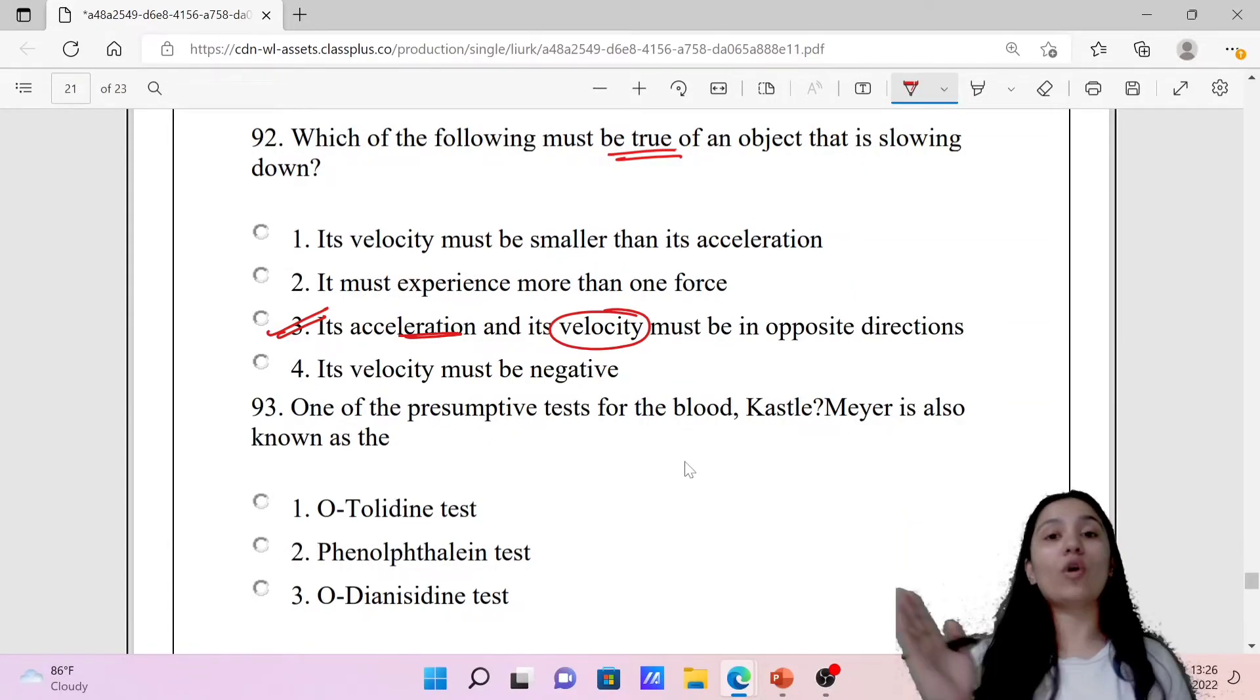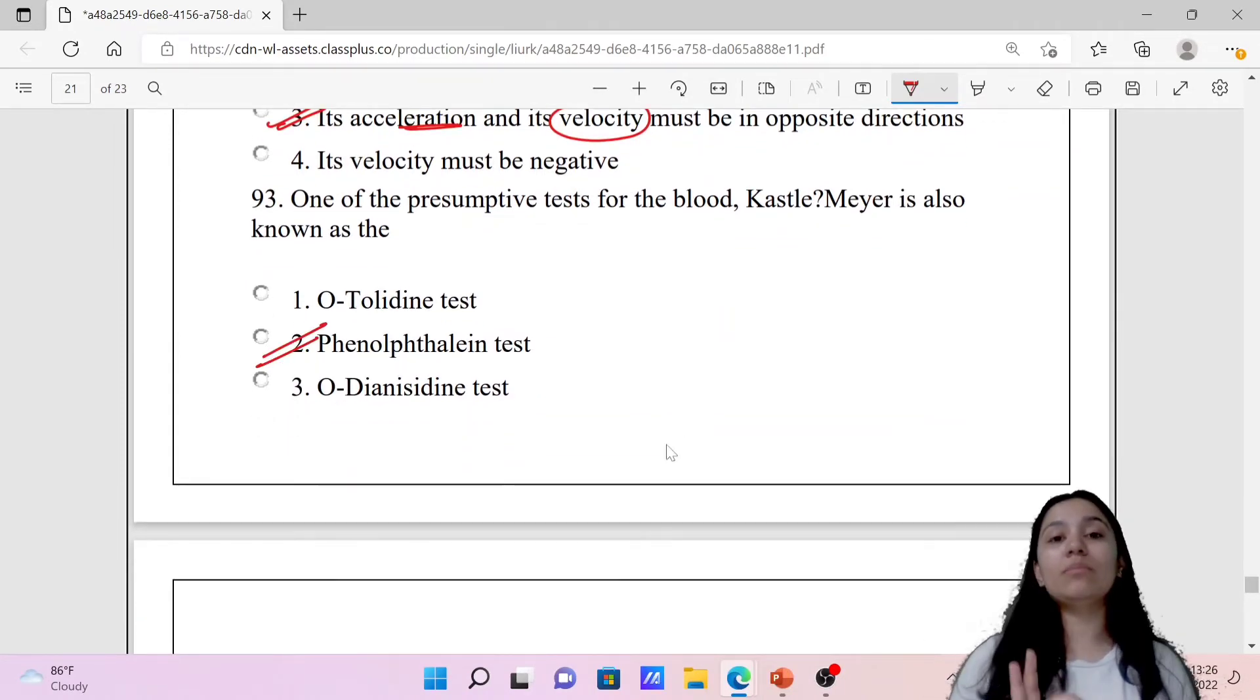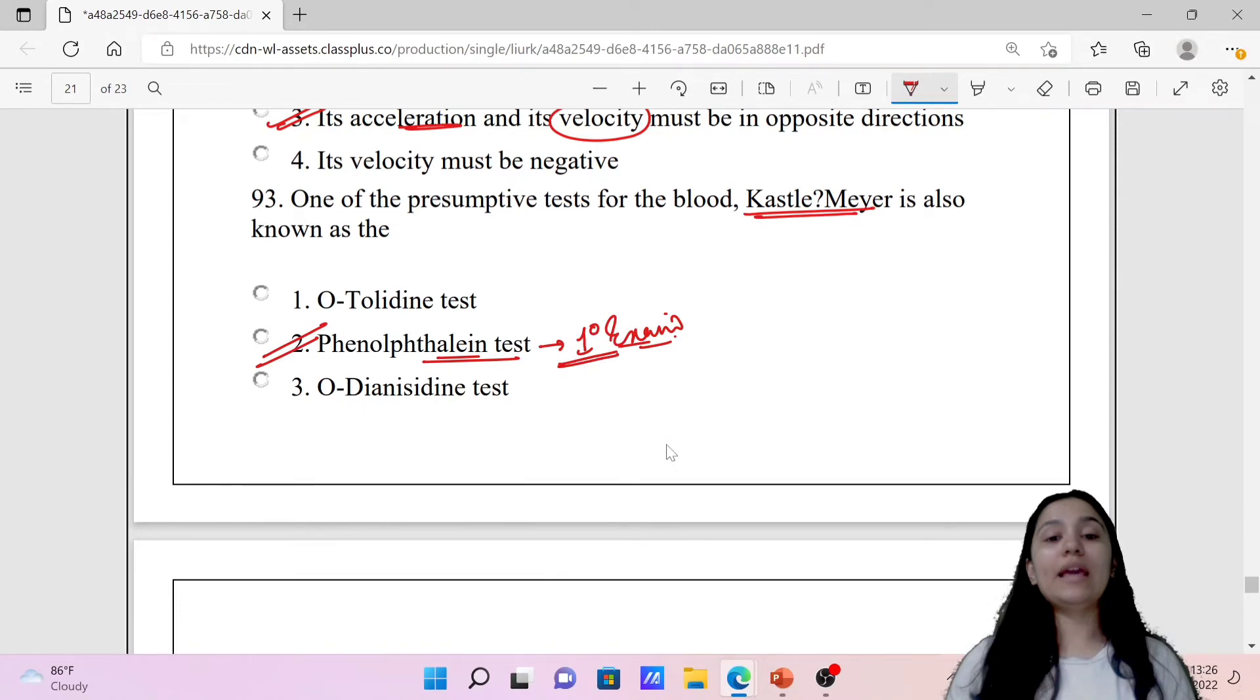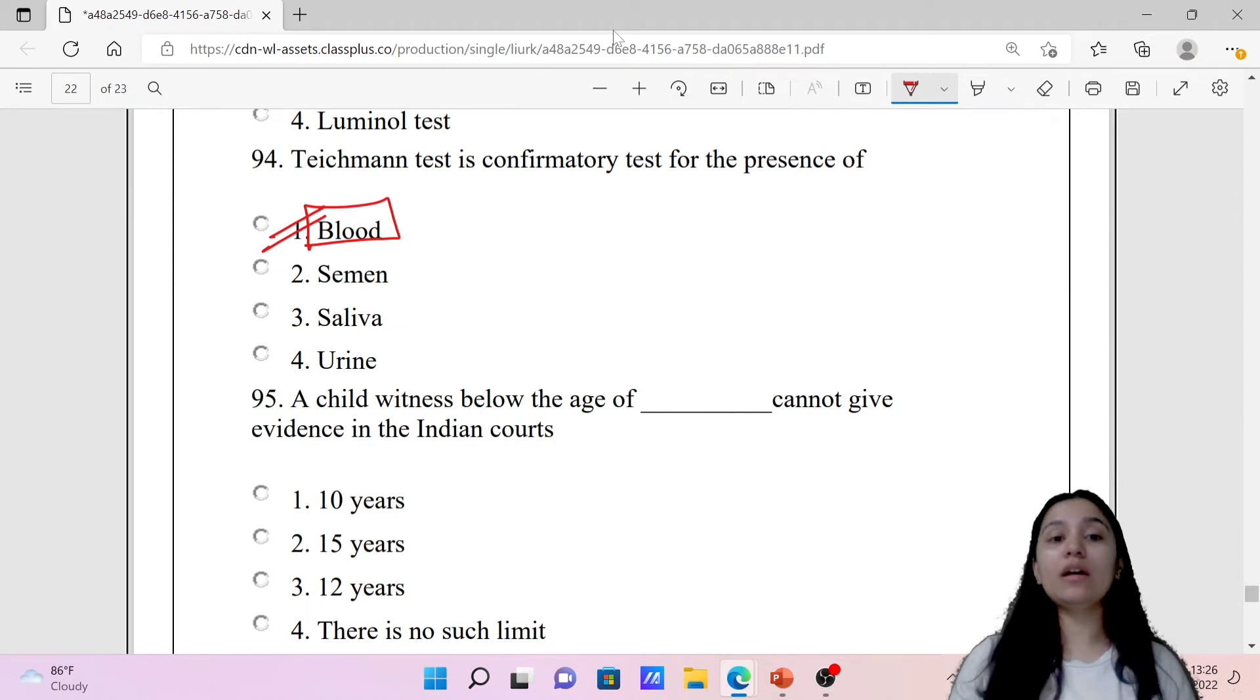One of the presumptive tests for blood, Kastle-Meyer, is also known as what? This is a very common question. The phenolphthalein test is also known as Kastle-Meyer test. This is a presumptive or primary examination for blood, not a confirmatory examination. Next question: Teichmann test is a confirmatory test for the presence of blood. This is a microcrystal test in which we can observe crystals under a microscope, and it is a type of confirmatory examination for blood.